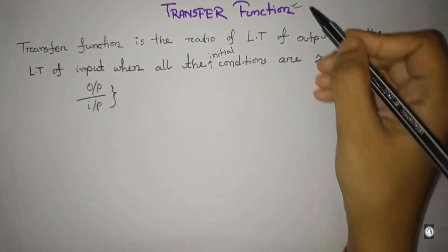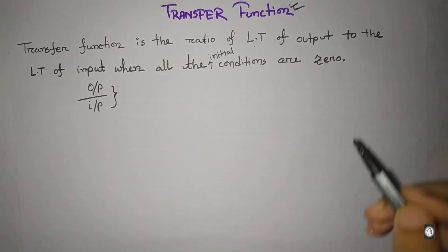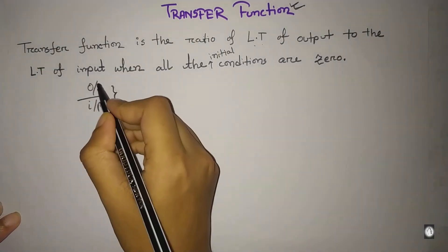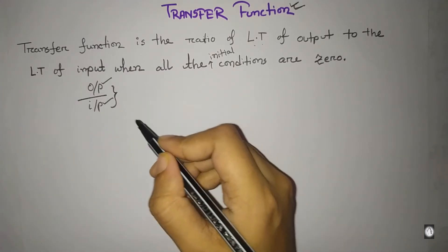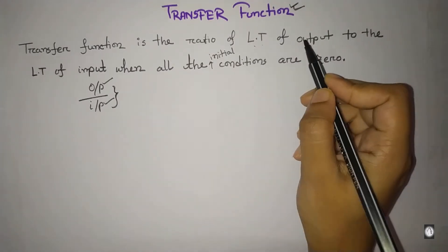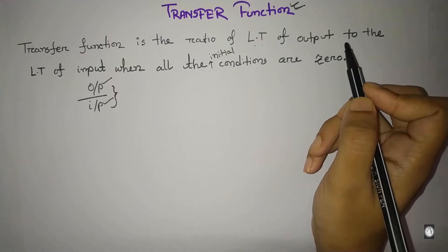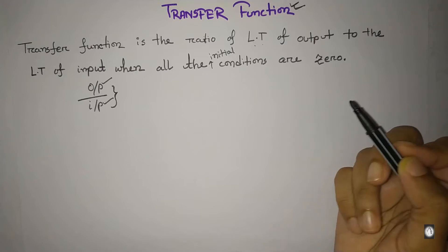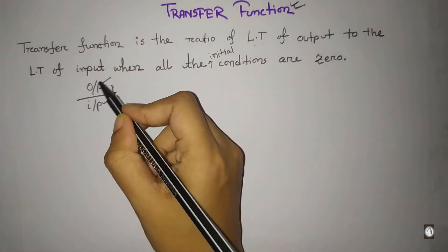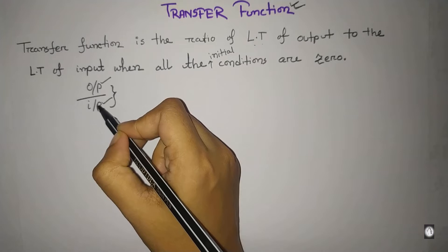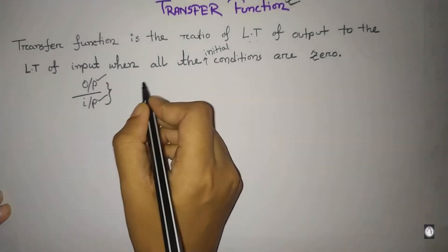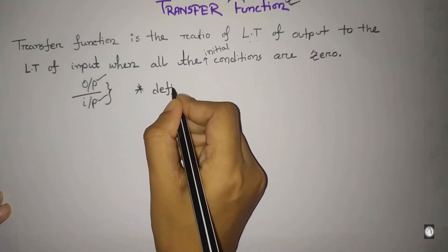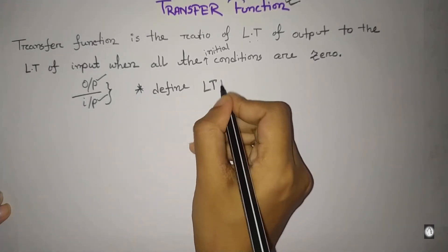In general, the transfer function represents the relationship between output and input. It is a mathematical procedure — a mathematical way of expressing the relationship between output and input. The transfer function is basically used to define an LTI system.